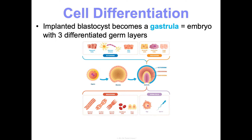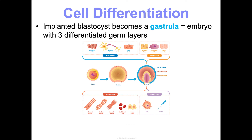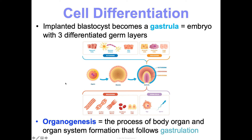When that blastocyst hopefully implants into the uterine lining, it becomes a gastrula and starts to differentiate into three germ layers: ectoderm, mesoderm, and endoderm. The ectoderm becomes cells for your skin and brain; the endoderm becomes pancreatic and stomach cells; the mesoderm becomes almost everything else. Then the process of organogenesis starts — the formation of body organs and organ systems that follows gastrulation.